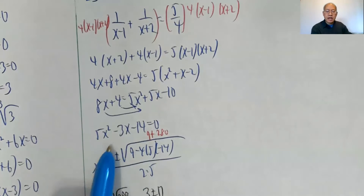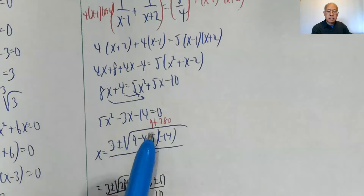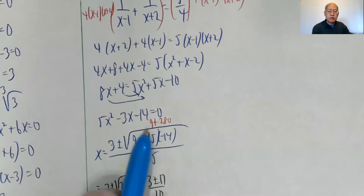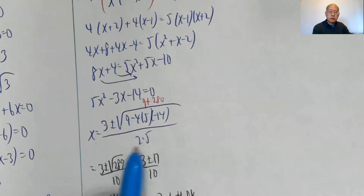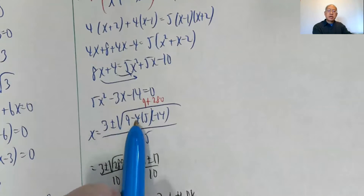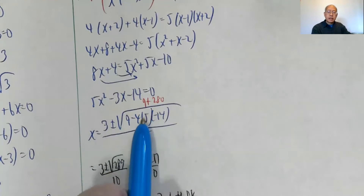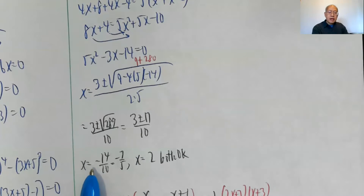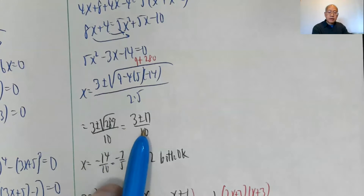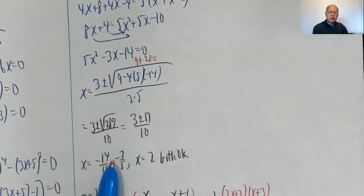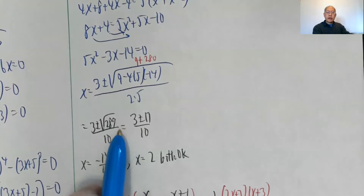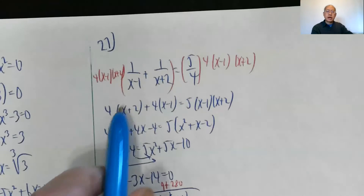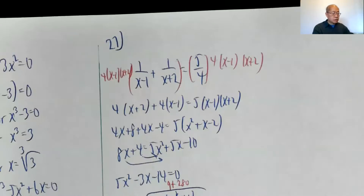Using the quadratic formula: x equals negative b, which is three, plus or minus the square root of b squared, nine, minus four times a, five, times c, negative fourteen, all over two times a, five. This gives nine plus two eighty, that's two eighty-nine, divided by ten. The square root of two eighty-nine is seventeen. So x is three minus seventeen, negative fourteen divided by ten, which is negative seven fifths. Or x is three plus seventeen, twenty, divided by ten, which is two. Both are valid — neither causes division by zero.